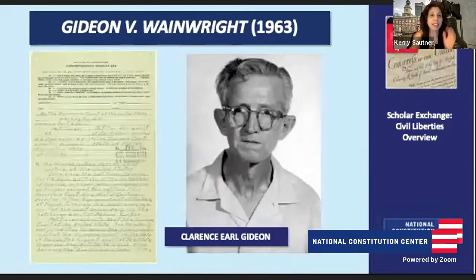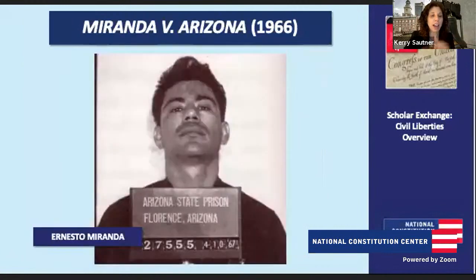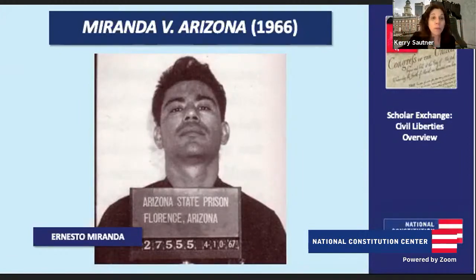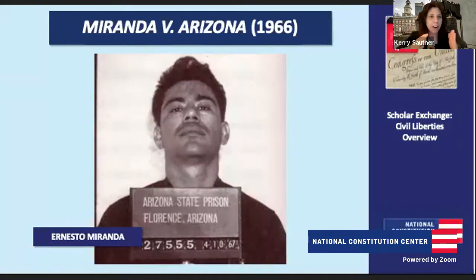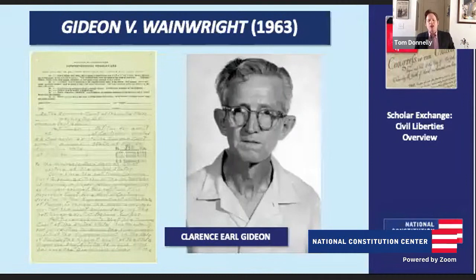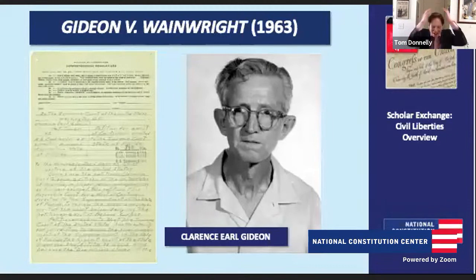Kerry Sautner: We can start with Gideon — I think Gideon is a fantastic story. And I love Miranda because Miranda's not a good guy, but civil liberties still apply to people who aren't good people. The facts of the case — that he's not a good guy — don't apply to the constitutional question. When we look at civil liberties, we all have them. They are our rights. Who we are as a person doesn't matter; who we are as a citizen and an individual does. Tom Donnelly: Let's start with Gideon. It's 1963. There's Clarence Earl Gideon — this really is just one of the most amazing stories in the history of the Supreme Court.